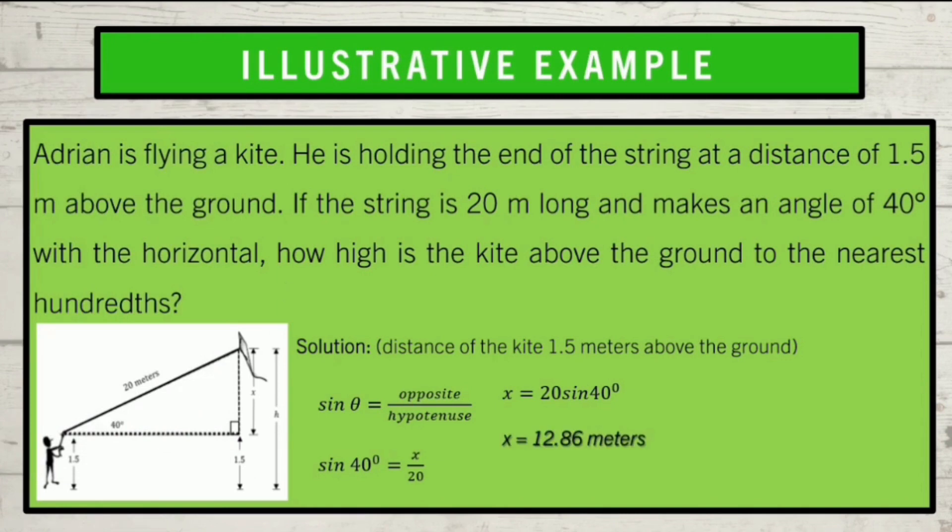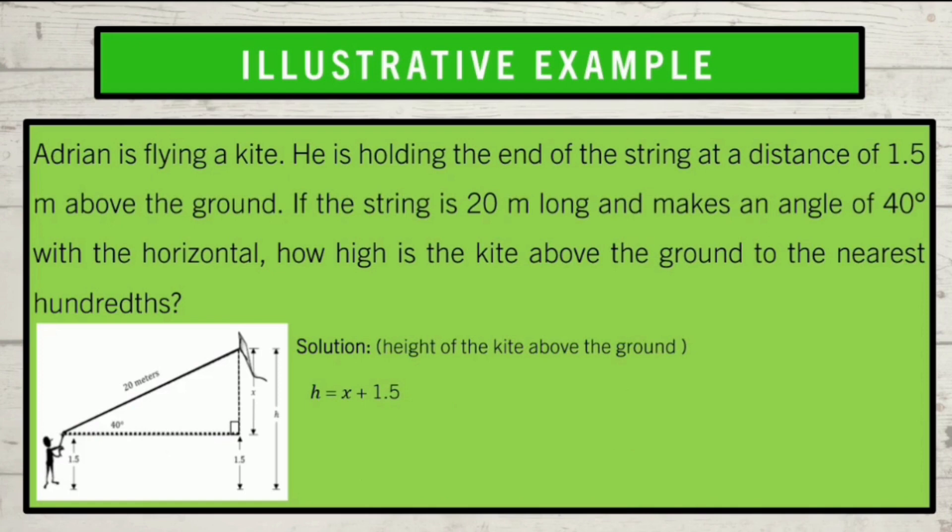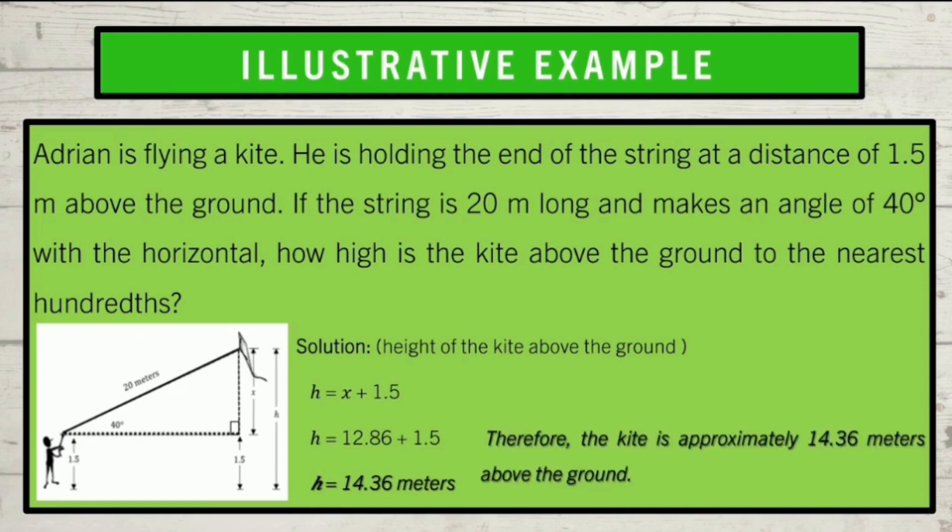To find the height of the kite above the ground, simply add 12.86 meters to 1.5 meters. And the total height is 14.36 meters. Do the checking by substituting the values found and the given in the original equation. Do the indicated operations and see that the two sides of the equations are equal. And write our conclusion which is therefore, the kite is approximately 14.36 meters above the ground. Did you get it right? Great! All right! I think you gained a lot of skills now to solve problems involving right triangles using trigonometric ratios.